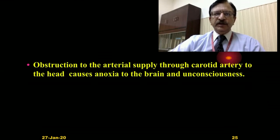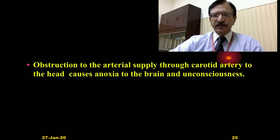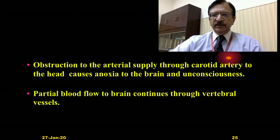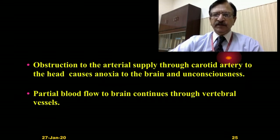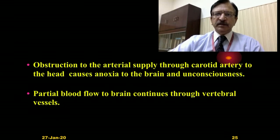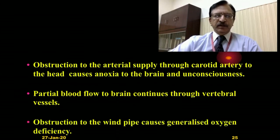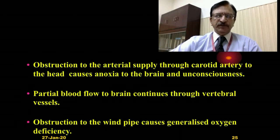Obstruction to the arterial supply through the carotid artery to the head and neck causes anoxia to the brain and unconsciousness. Partial blood flow can continue through the vertebral vessels, which run within the vertebral foramina — a canal formed by the stacked vertebrae. Obstruction to the windpipe causes generalized oxygen deficiency, or hypoxia.